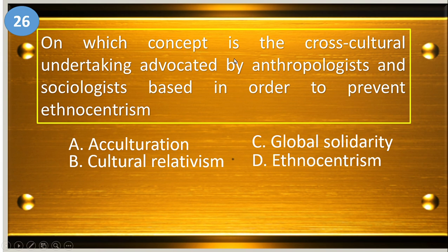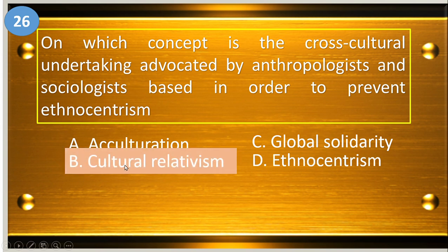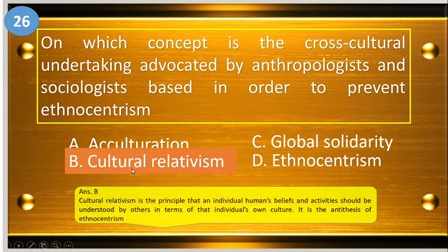Number twenty-six: on which concept is the cross-cultural undertaking advocated by anthropologists and sociologists based in order to prevent ethnocentrism? A, acculturation; B, cultural relativism; C, global solidarity; and D, ethnocentrism. The answer is cultural relativism.